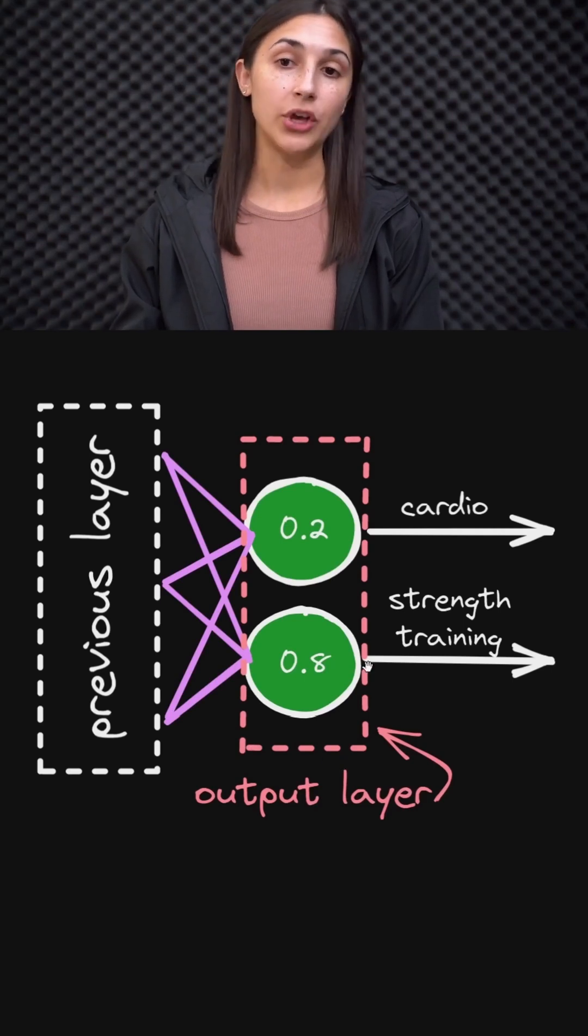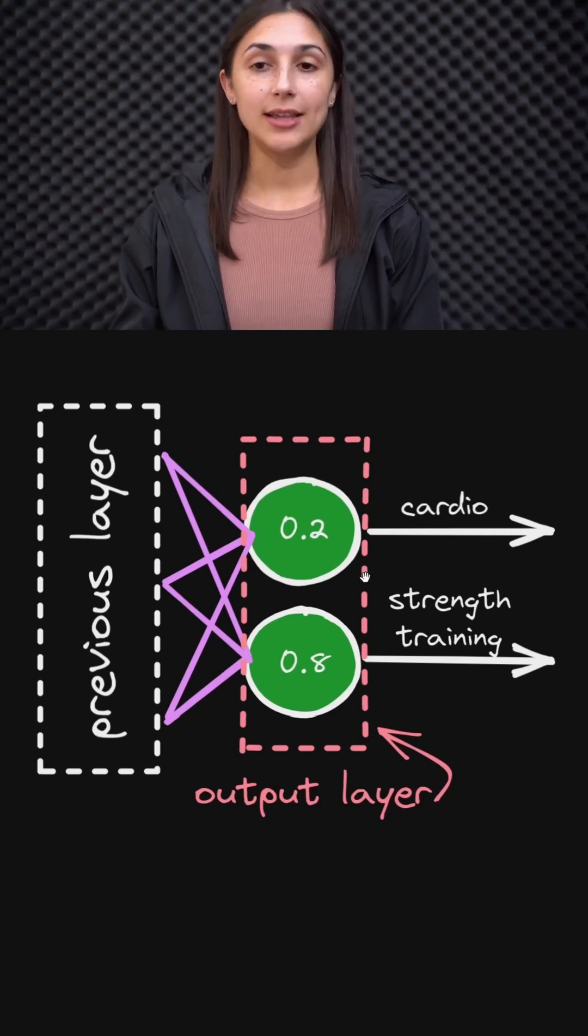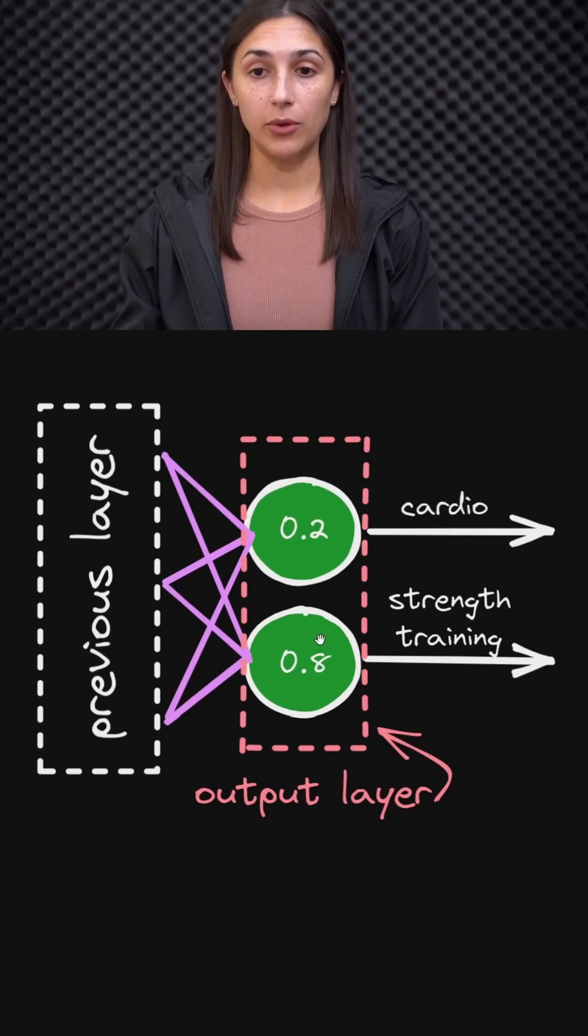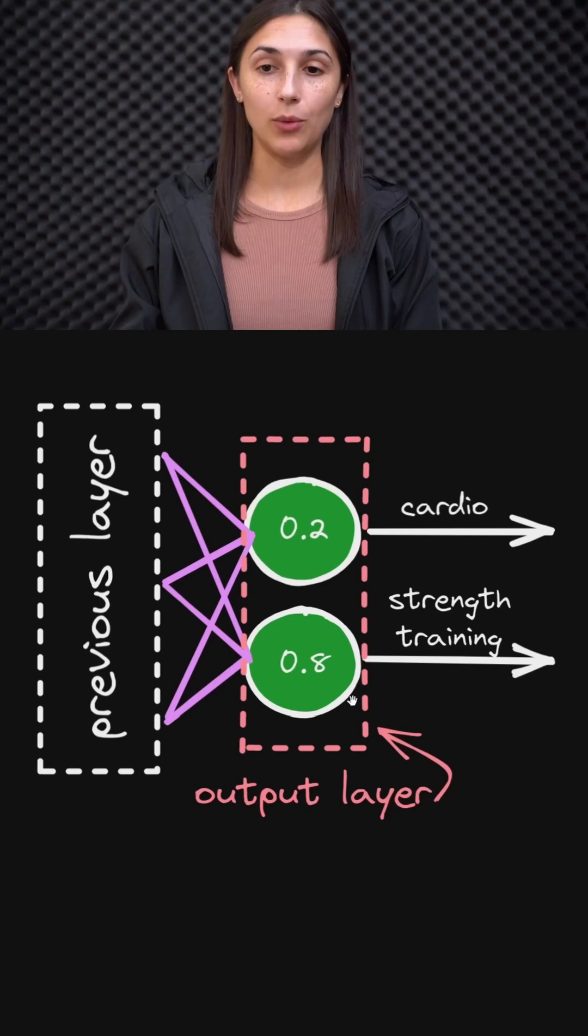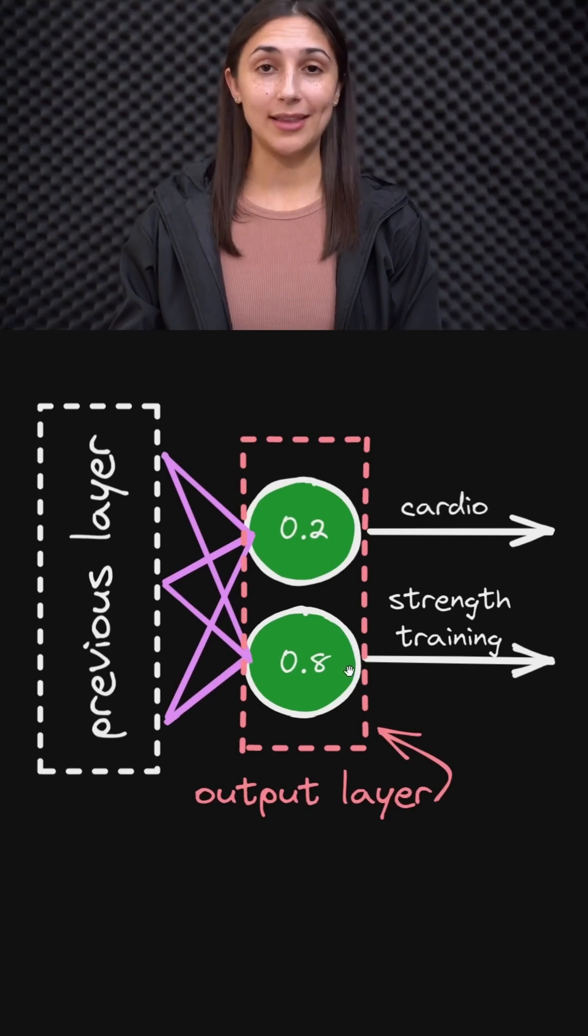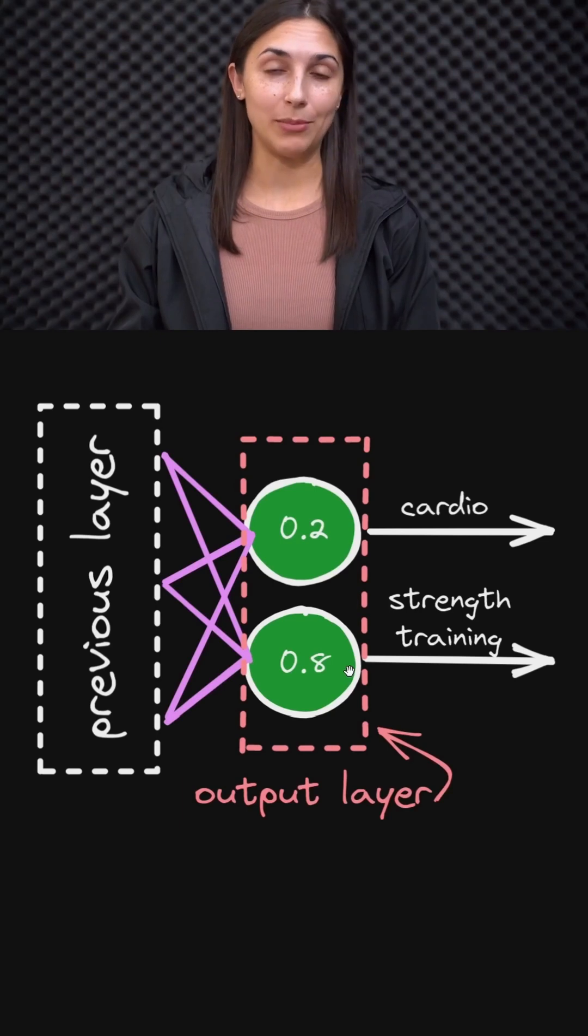Since this particular example has two nodes in the output layer, this means that we have two possible output classes, because we're focusing on a classification task. And so when we see two nodes in the output layer, that means there's two possible output classes for which an individual input could belong to.